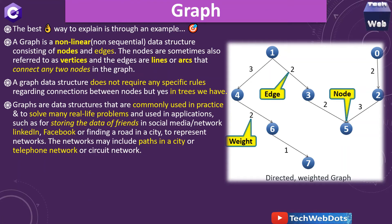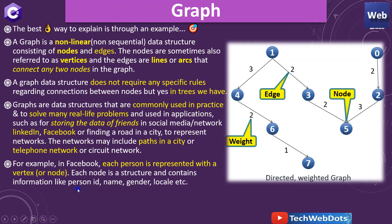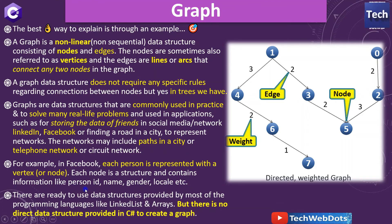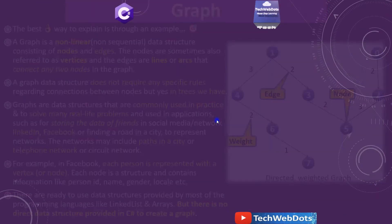There are very good examples out there of graph in real world. For example, in Facebook each person is represented with a vertex or node, and each node is a structure and contains information like ID, name, gender and its locale. There are ready-to-use data structures provided by most programming languages like linked list and arrays, but there is no direct data structure provided in C# to create a graph. That's big information for you.